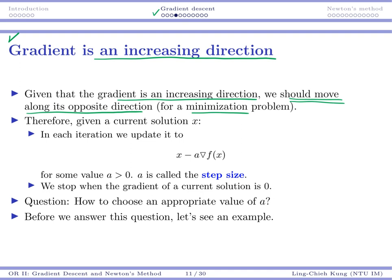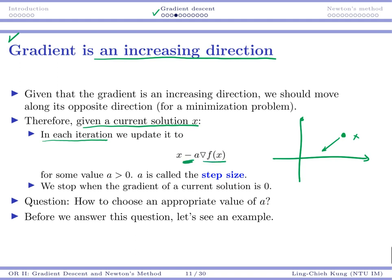Its general strategy is that, I want to minimize the function. Then at a given point, I want to know where I should move. We want to first find a gradient so that its opposite direction is guaranteed to give us some minimization effect. So given a current solution x, we want to do one iteration and update ourselves to the opposite direction of our gradient.